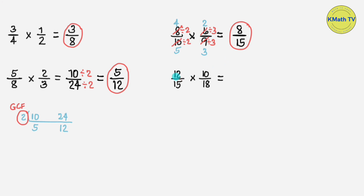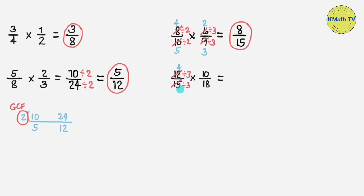Last example: 12 fifteenths times 10 eighteenths. Let's use cancellation to solve this problem. We can cancel the first fraction, twelve fifteenths, because the numerator 12 and the denominator 15 have a GCF of 3. So let's divide them by 3: 12 divided by 3 equals 4, and 15 divided by 3 equals 5.